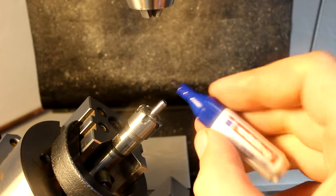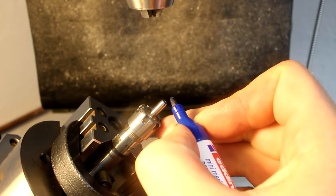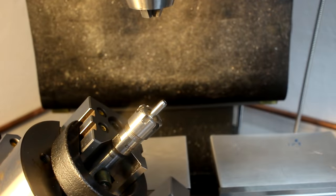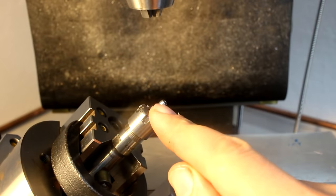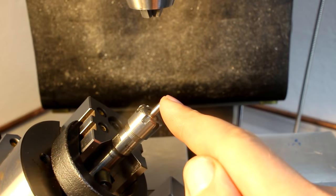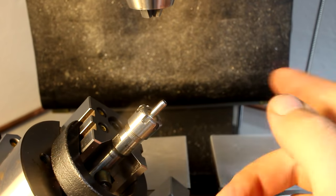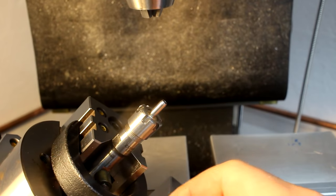The problem is edge finding on here or finding a proper zero reference in this orientation is kind of tricky on a part like this. But there is a neat trick to do this and that's called a tooling ball.